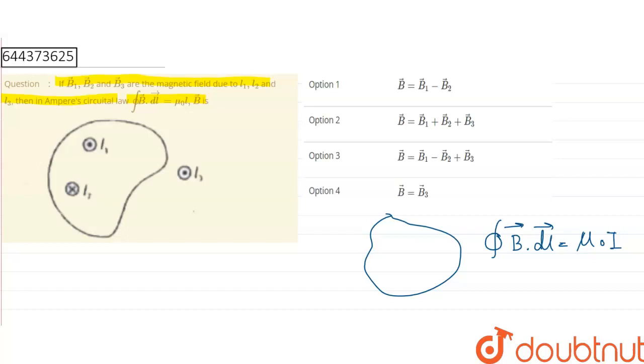So there are three different magnetic fields. For the magnetic field B1 vector, B1 vector dot dl vector equals mu0 i1. Then B2 vector dot dl vector equals mu0 i2. And the third one, B3 vector dot dl vector equals mu0 times current i3.